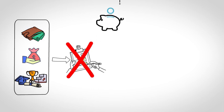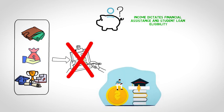First, you don't know what your income will be, which dictates financial assistance and student loan eligibility. Second, you don't know if or how much your child will get in the way of scholarships.